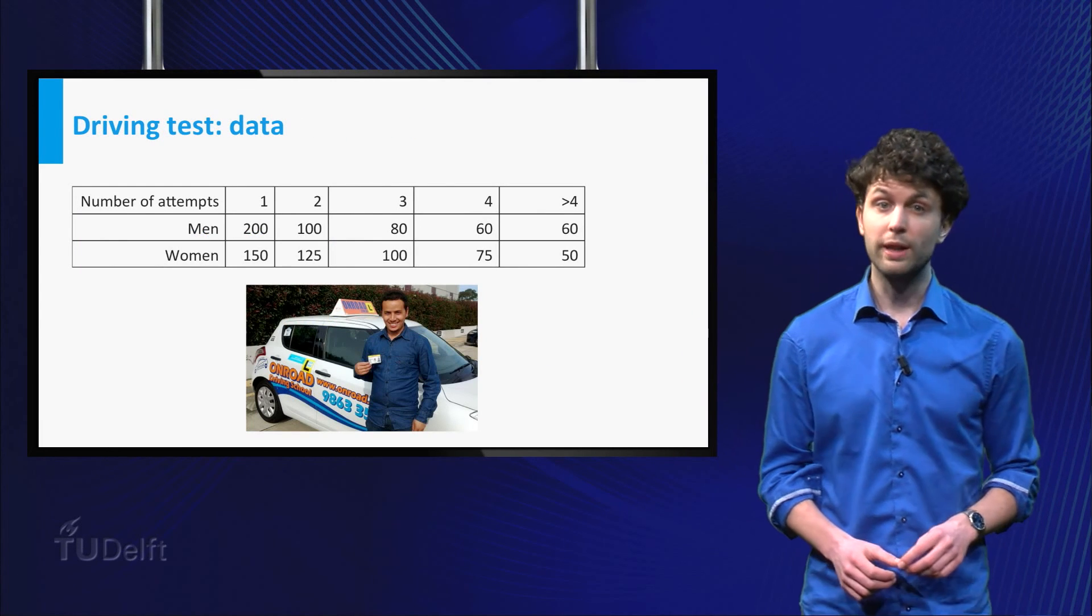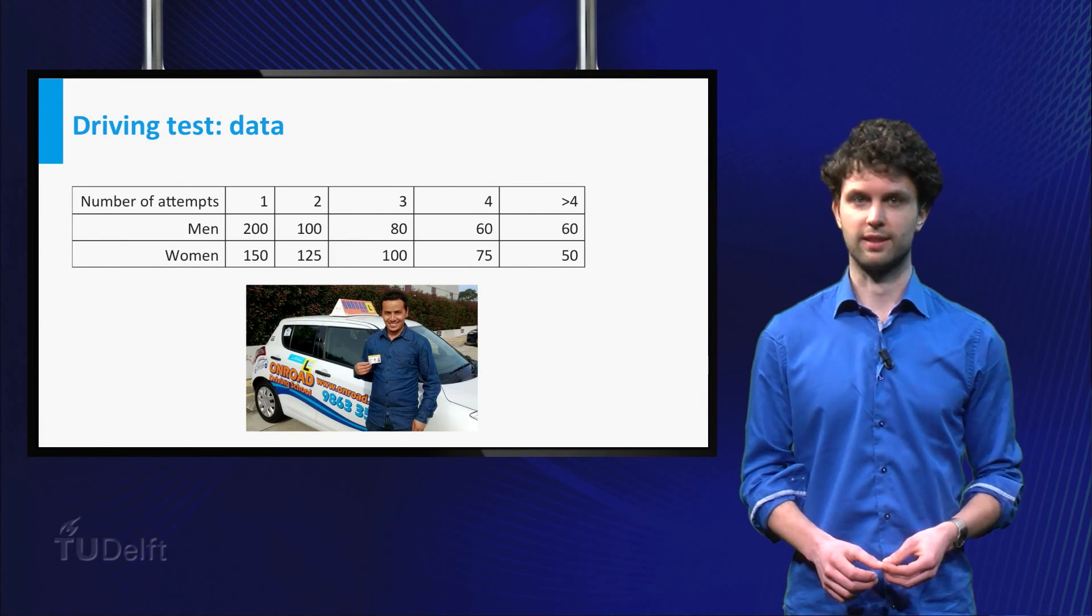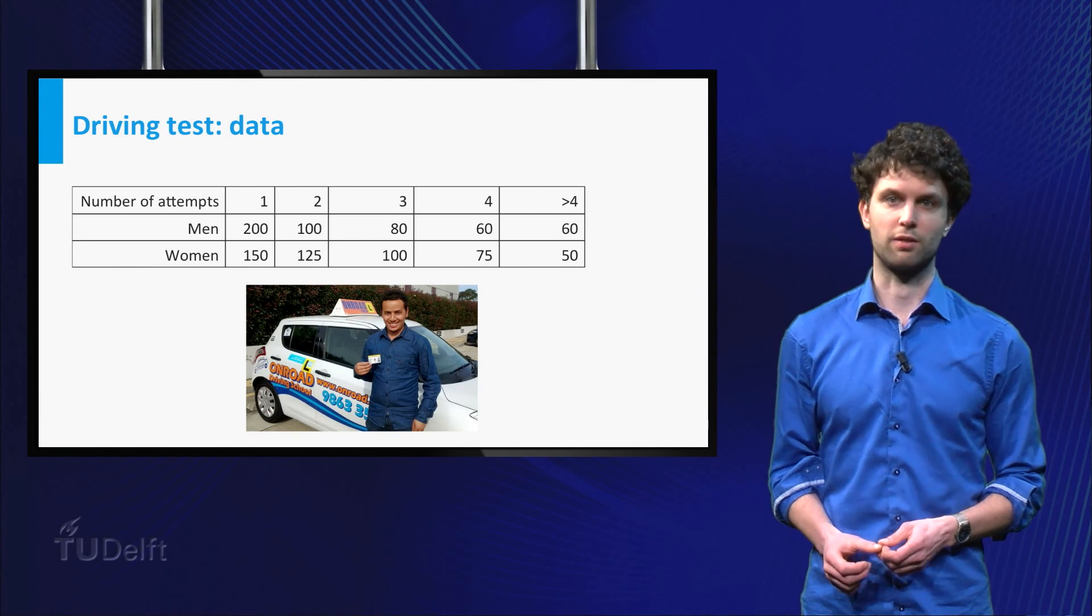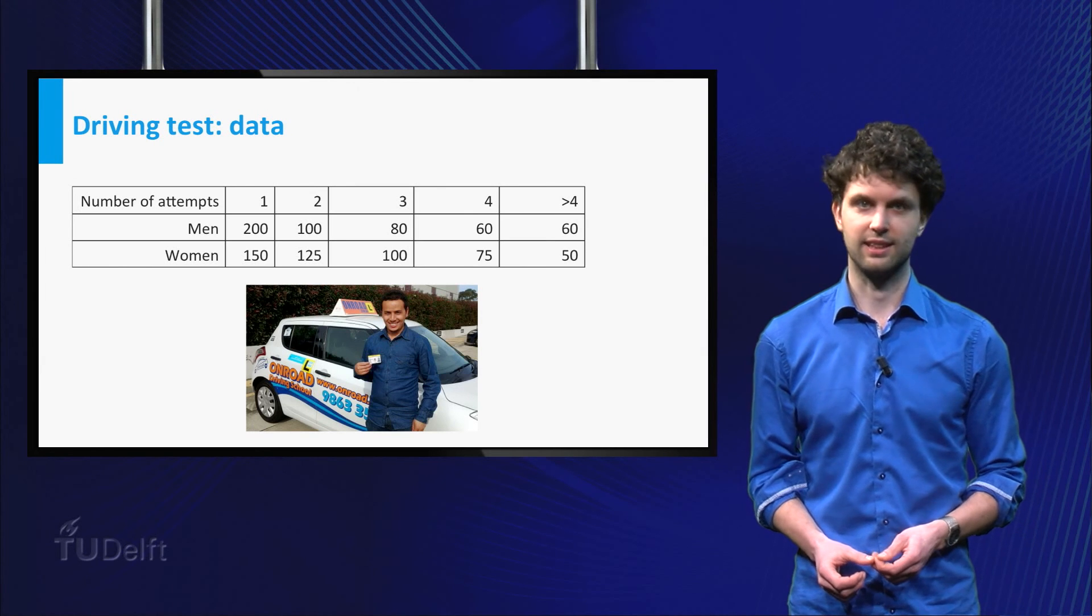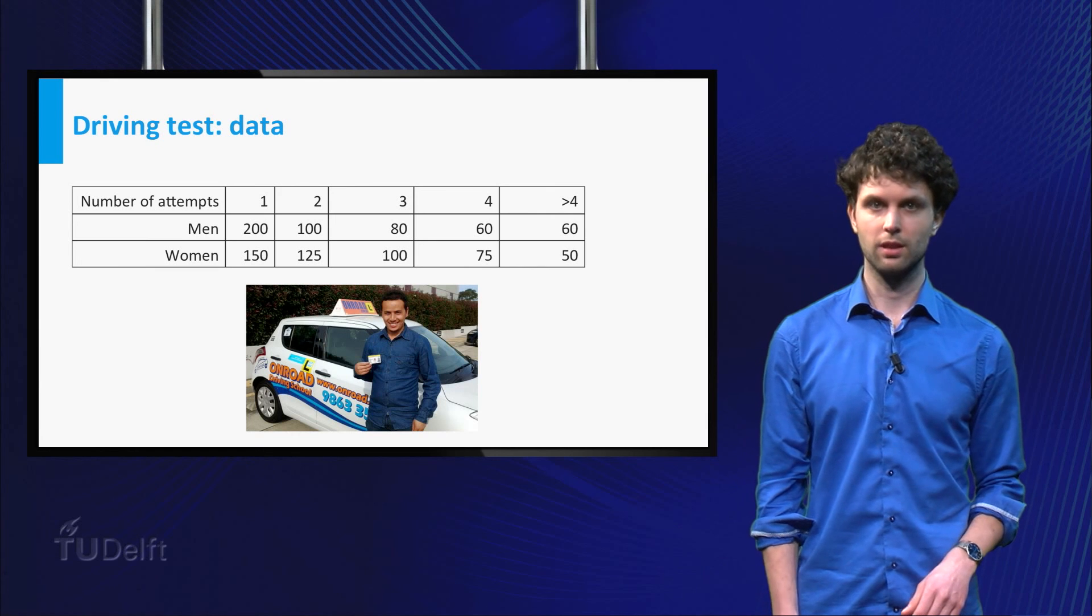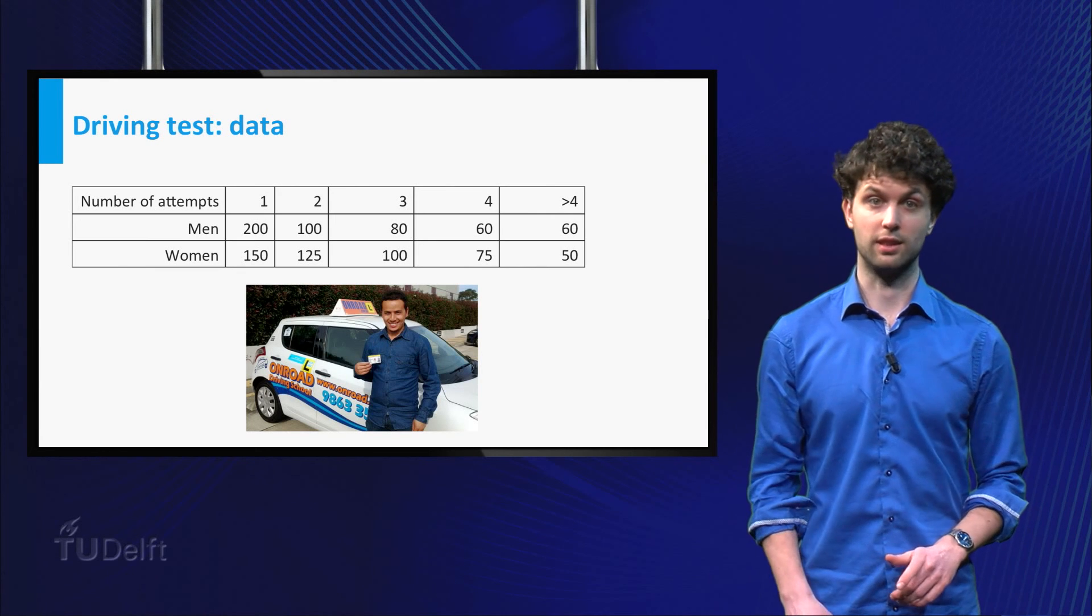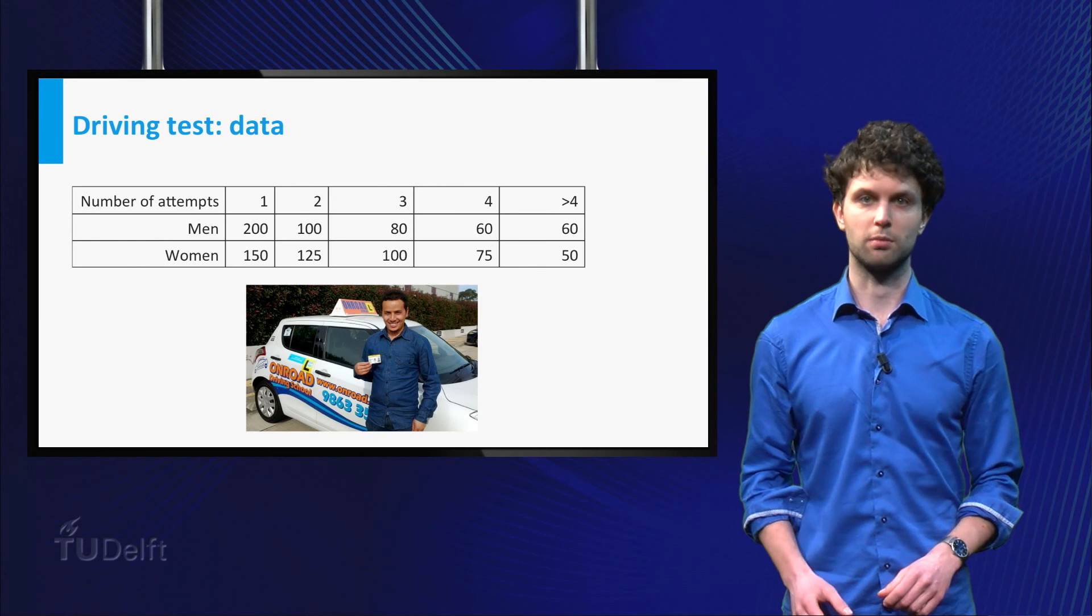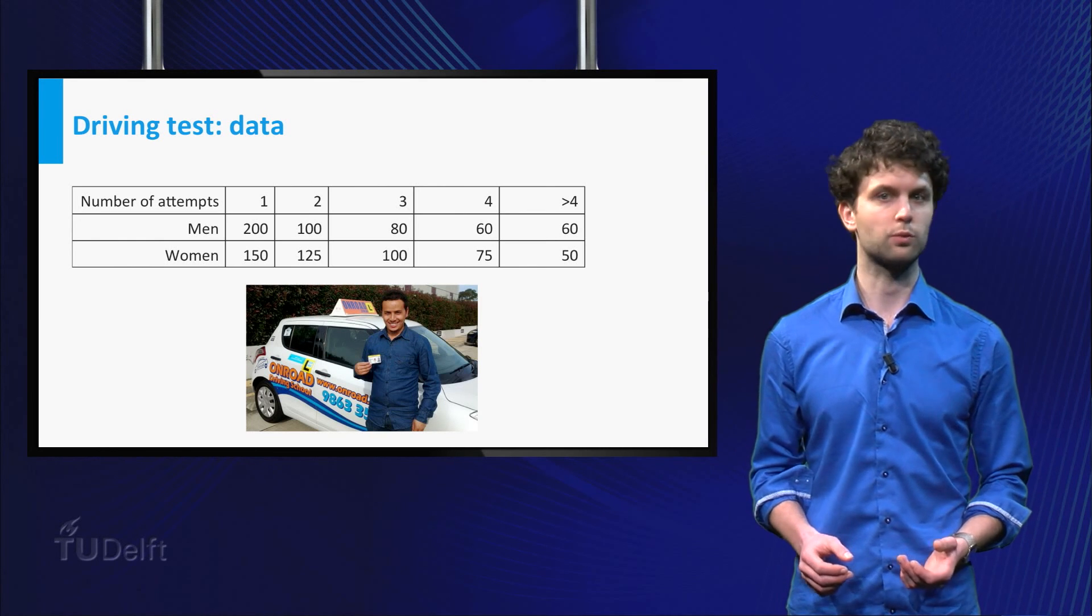Suppose in a year, one thousand people tried to pass their driving test. In the table over here, you see the results. Note that the number of tries that is needed to pass the test is displayed, and some people needed more than four tries. You can also see that the distribution among men and women seems different.